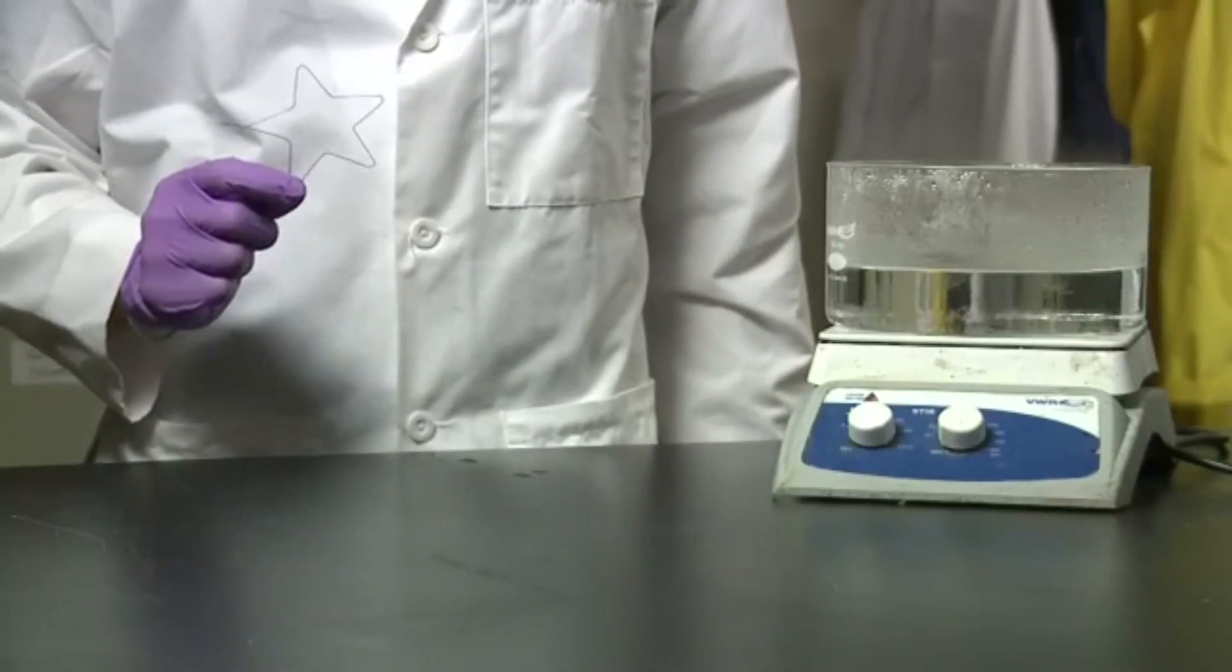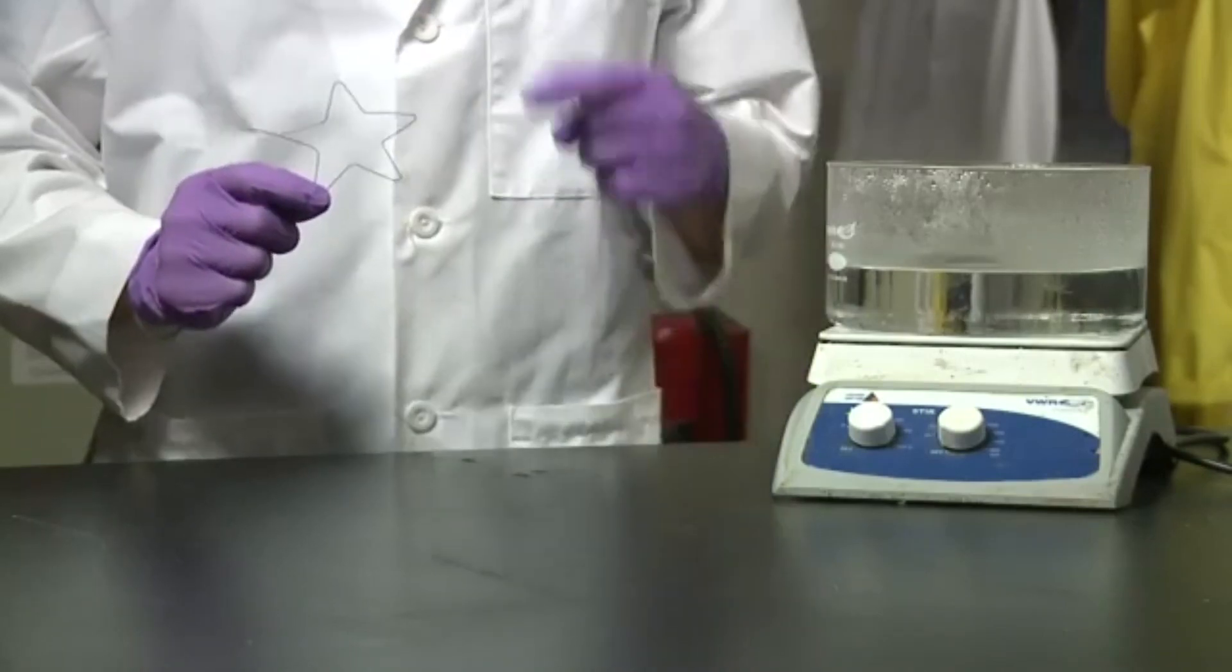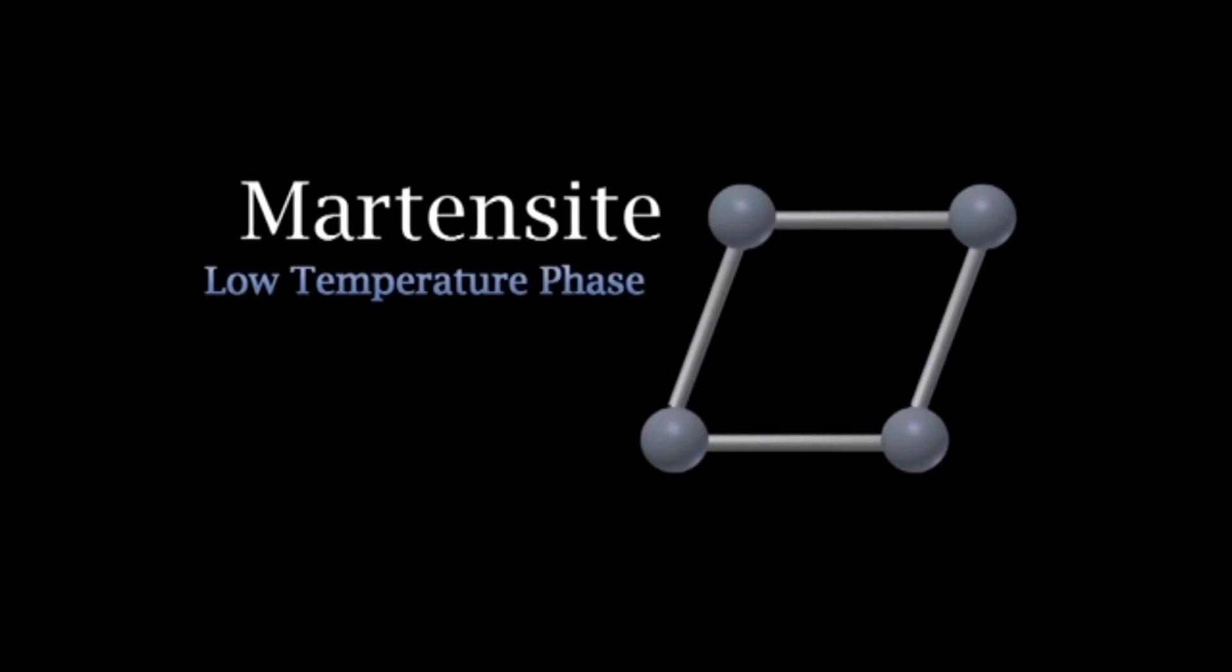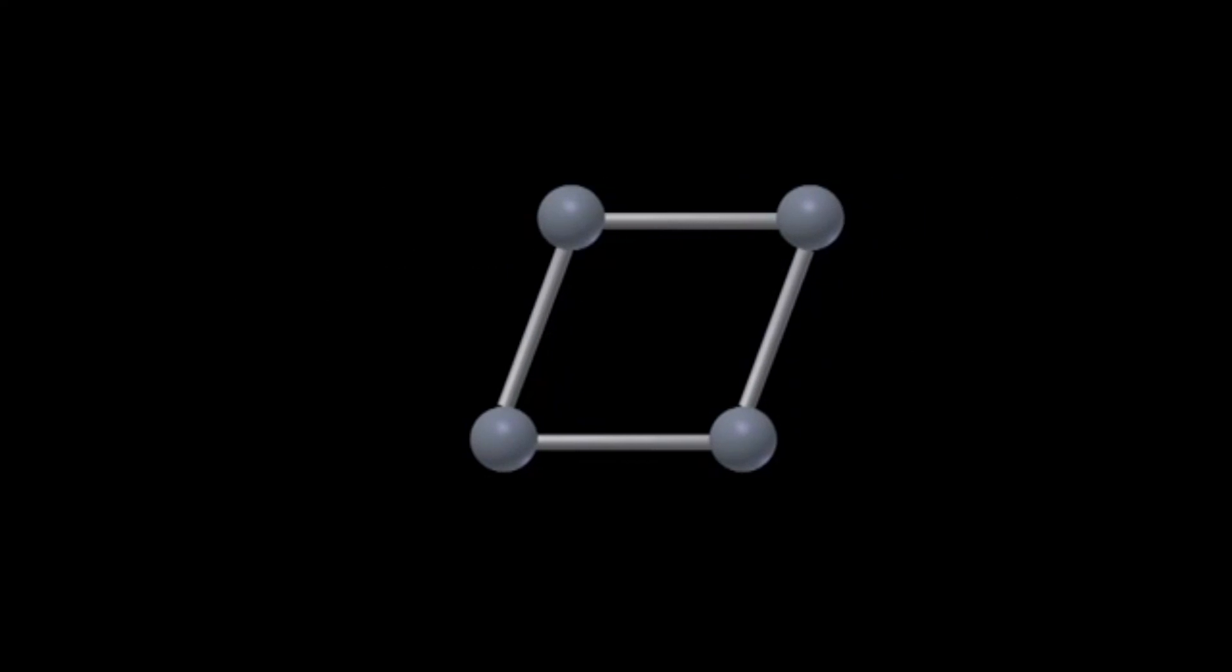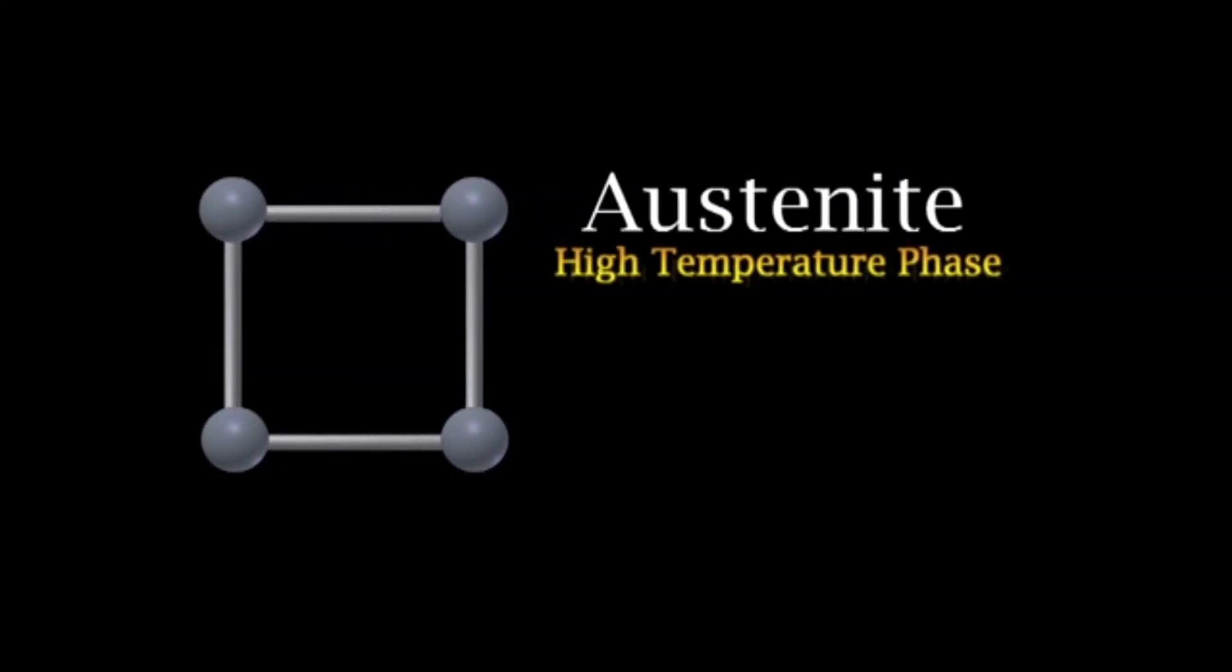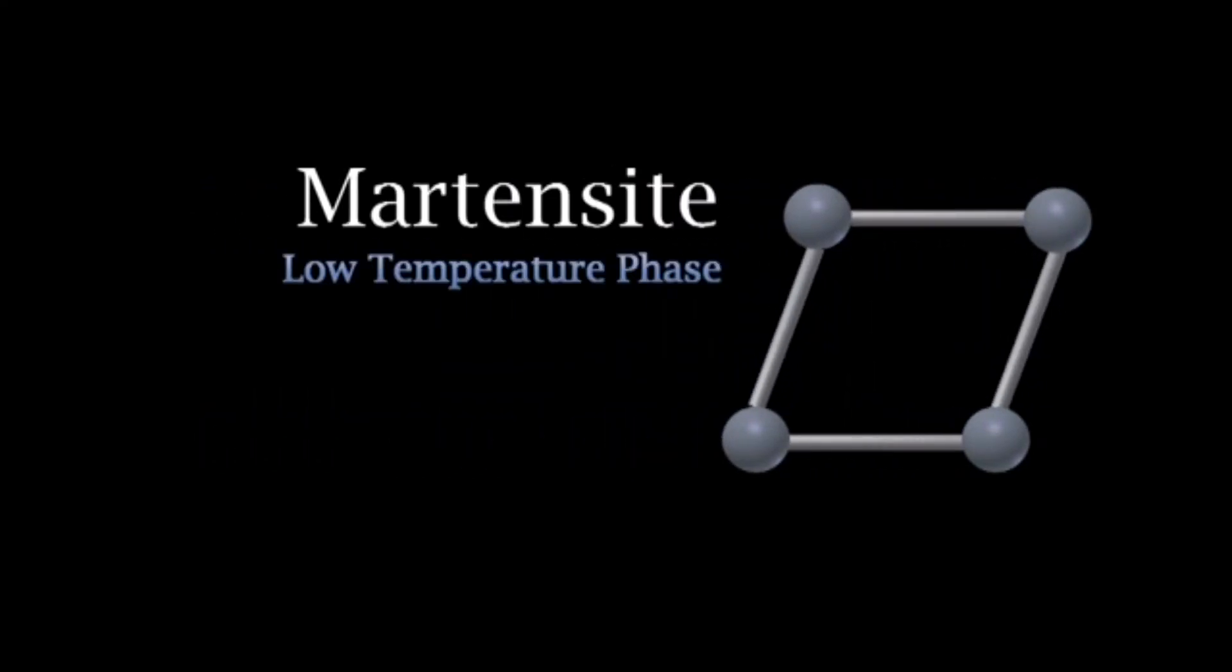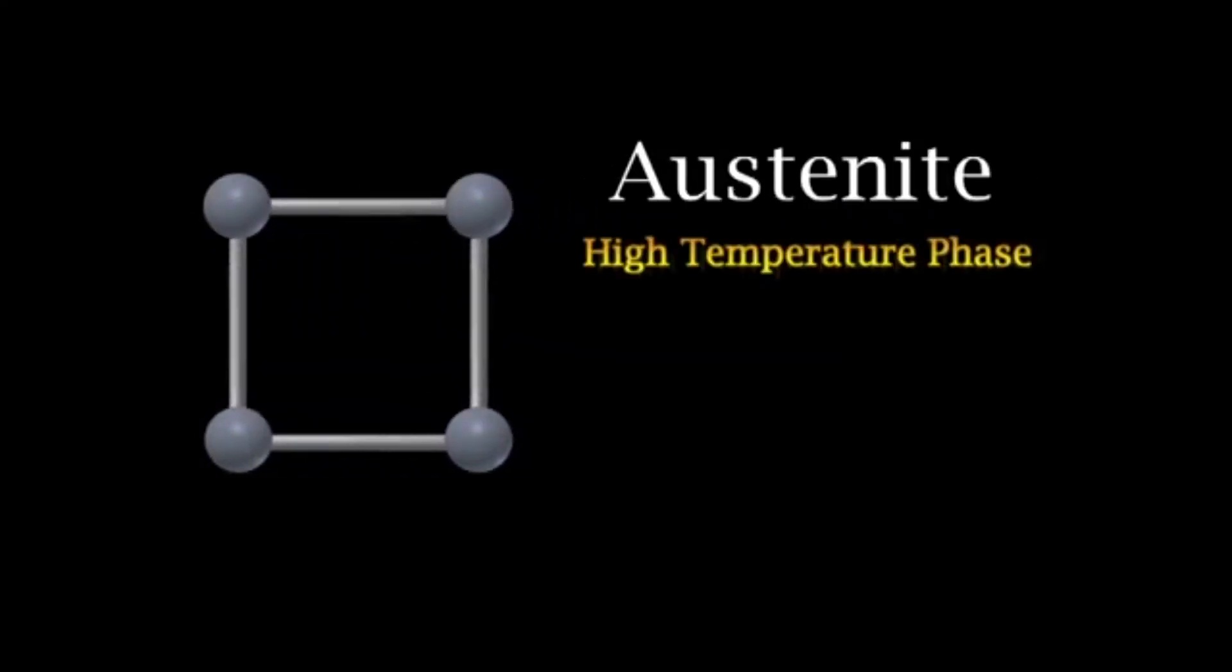So how does this fit into shape memory materials? These materials also have multiple solid phases. There is a low temperature phase called martensite. But if we increase the temperature, the atomic alignment changes into another phase called austenite. So at low temperatures we have martensite and at high temperatures we have austenite.